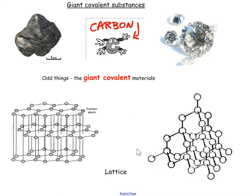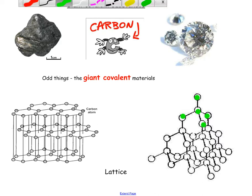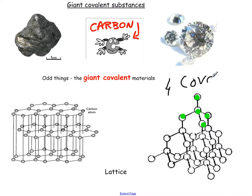Whereas in these giant covalent ones, these lattices — in the case of carbon — they can just keep going and going. These are all carbon atoms, all sharing electrons, and each carbon is sharing with four other carbons. So in a diamond, each carbon has four covalent bonds.